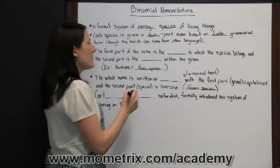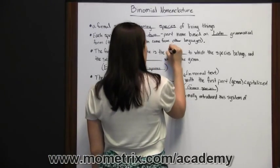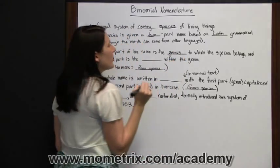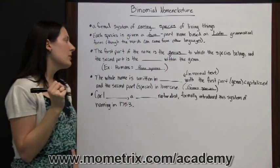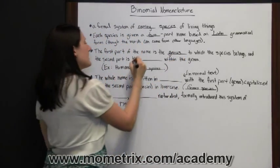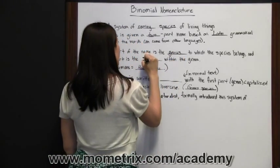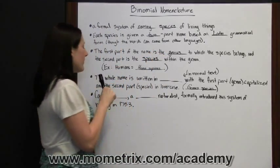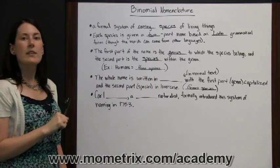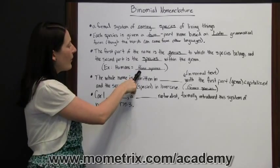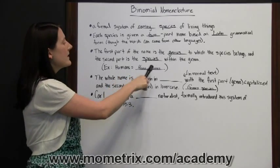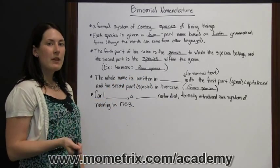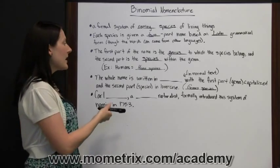The first part of the name is the genus to which the species belongs, and the second part is the species within the genus. For example, humans belong to the genus Homo and the species Sapiens, so we would be known as Homo Sapiens.